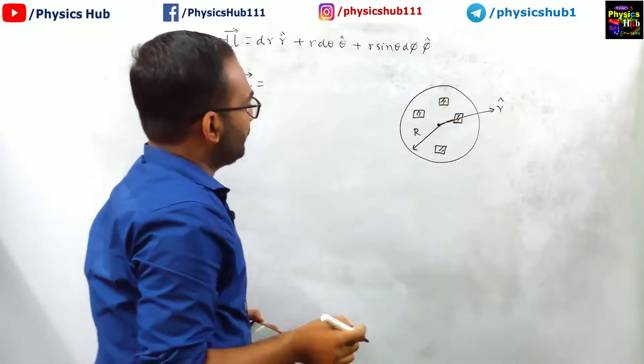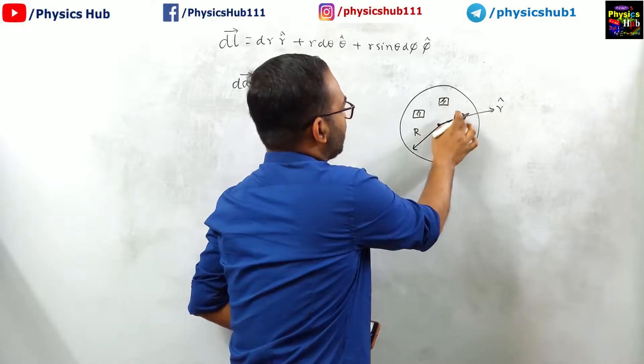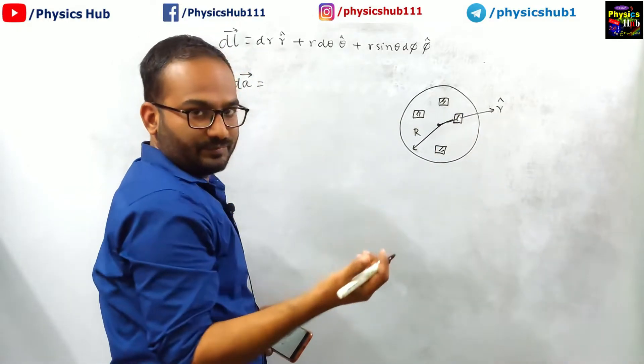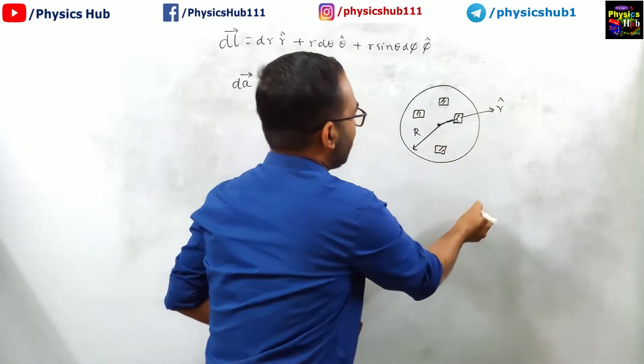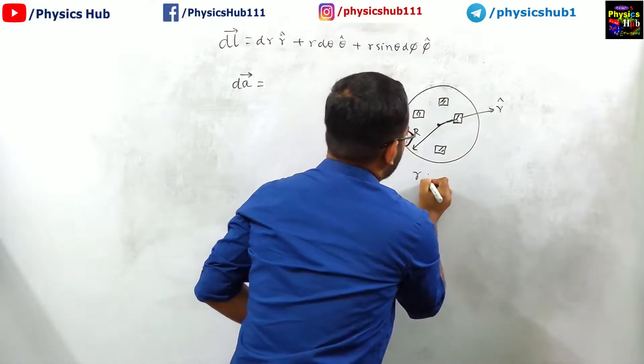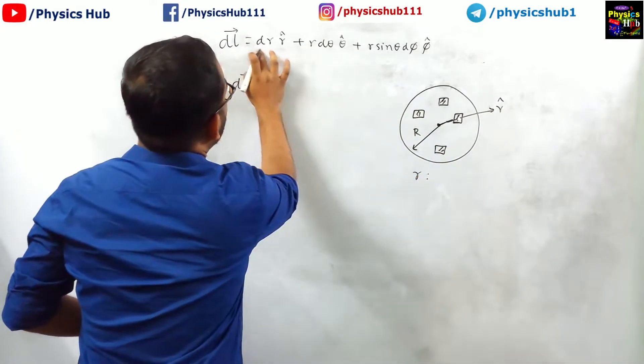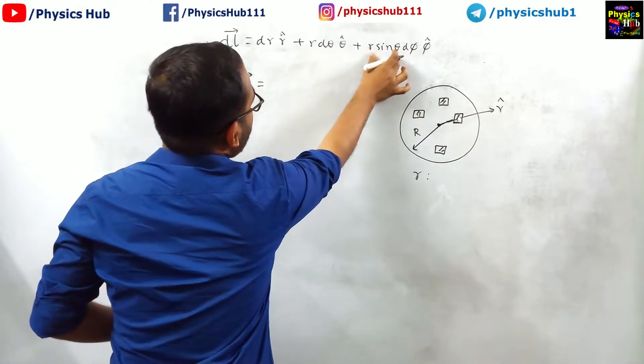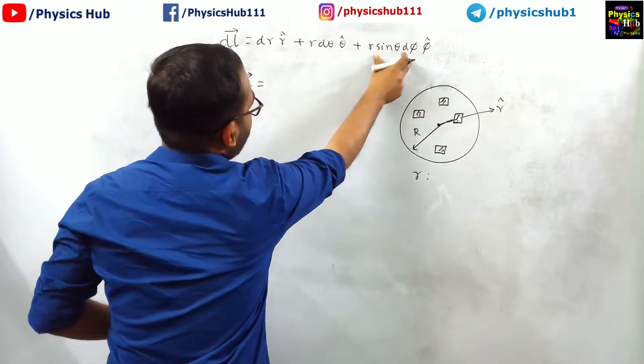Remember one thing, whatever quantity is not changing, that will be 0. r is not changing, variable r is not changing, so dr will be 0. So this term will not be there, only this term and this term will get multiplied: r d theta into r sin theta d phi.